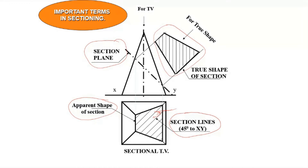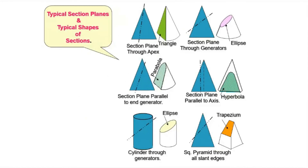This material is simple. In most cases, what you have to do is draw the front view, the top view, then the section line, then the sectioned surface — the apparent shape of the section — in the top view or front view depending on the case, and then the true shape. So it is relatively straightforward. Let's see some typical section planes and typical shapes of the section.